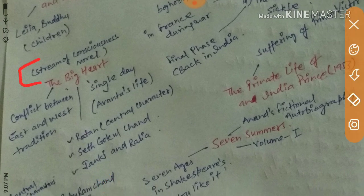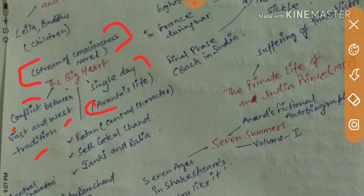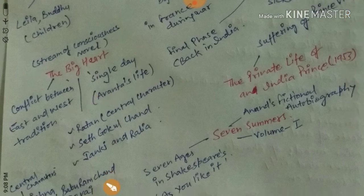In The Big Heart, the conflict between Eastern and Western traditions is shown as the central theme. It covers a single day in Ananta's life. The central characters are Ratan, Set, Gokul, Chand, Janaki, and Rolia — these are the important characters to remember from this work.